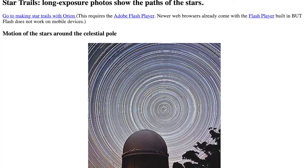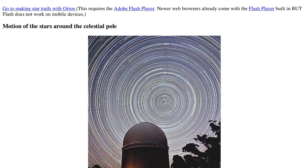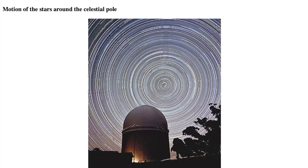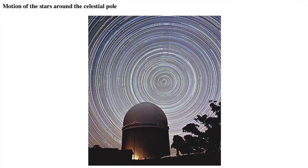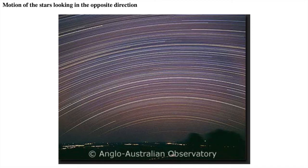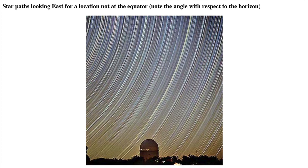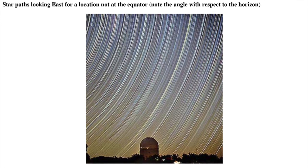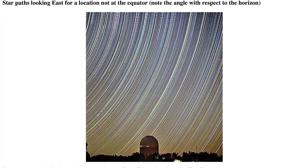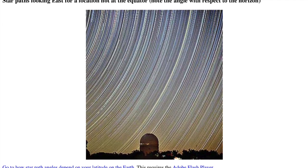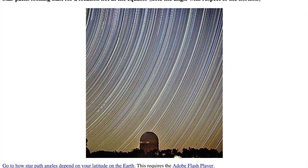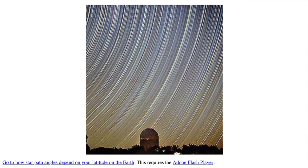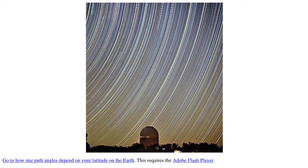This lecture slide shows several star trails pictures where the shutter of the camera was left open for several hours, so you can see the star paths traced out over this long exposure. The first picture shows the stars appearing to spin around the celestial pole. Looking in the opposite direction, you see the star trail arcs getting up highest as they cross the meridian. Looking east, these star trails show that the stars rise at an angle with respect to the horizon. At the top of the lecture slide is a link to a hands-on animation called Making Star Trails with Orion, and at the bottom is another called How Star Paths Angles Depend on Your Latitude on the Earth. Unfortunately, they require Adobe Flash, so the instructor will demonstrate them in this video lecture.